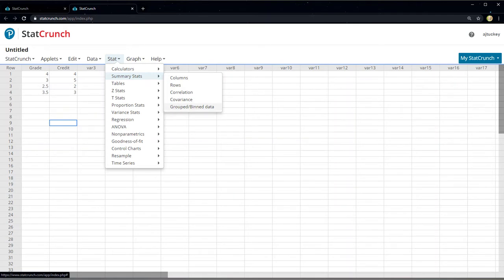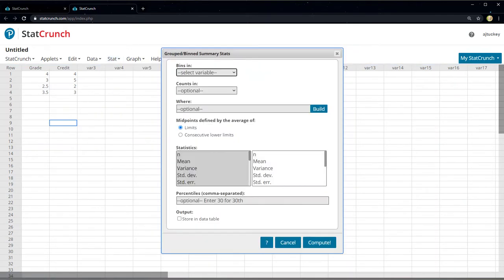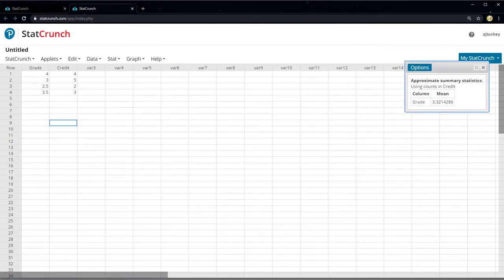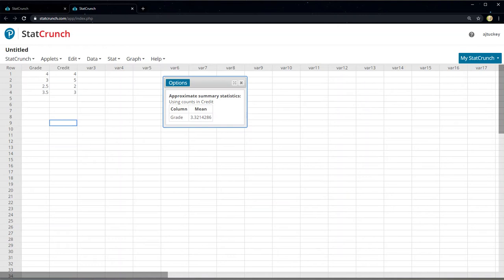Then you go to stat, grouped bin data - summary stat, summary statistics for grouped data, because we really have a frequency list going on here. Grouped bin data, and it says the bins are the grades - those are the x values. The counts, which are the frequencies, were the credits. Then I can tell it what I want it to find. I want it to find me the mean. Then I should just be able to click compute. And there it is, 3.321. Simple as that.